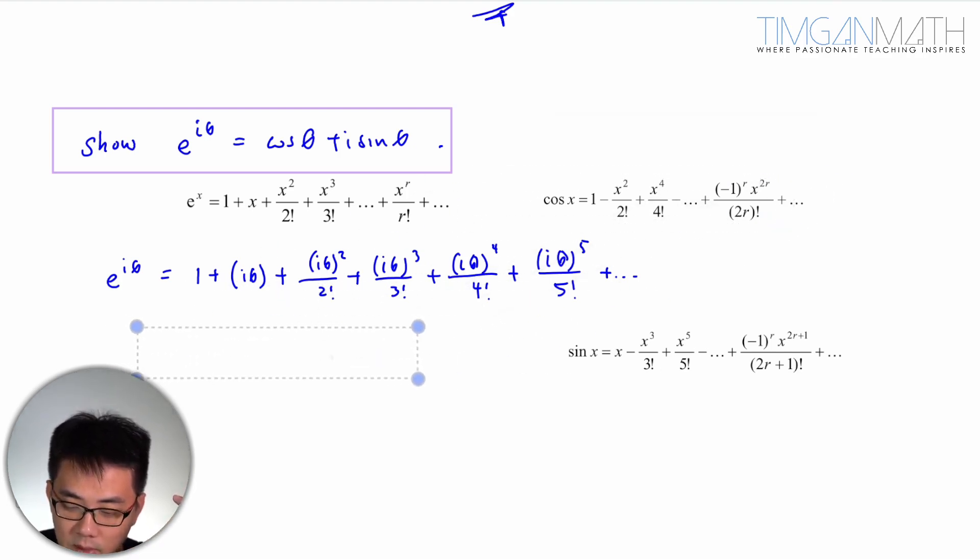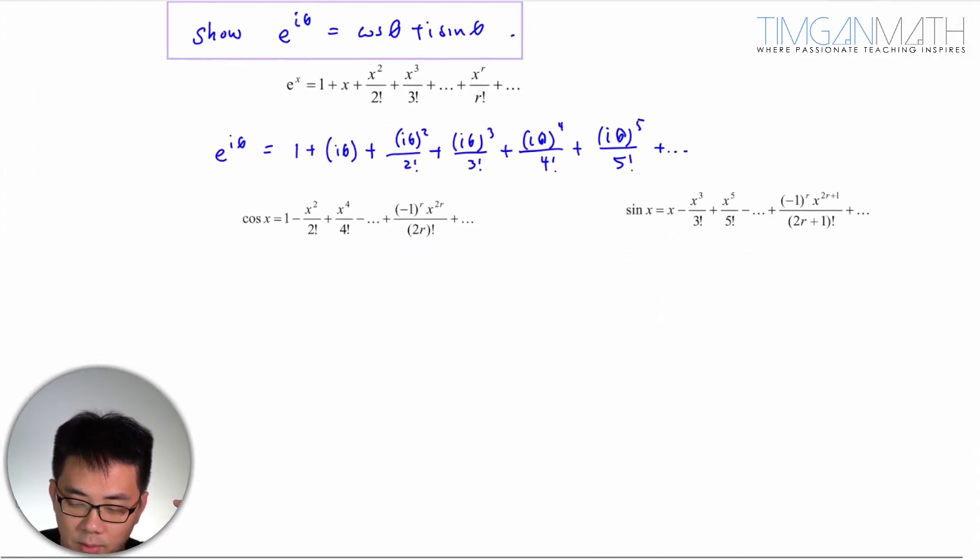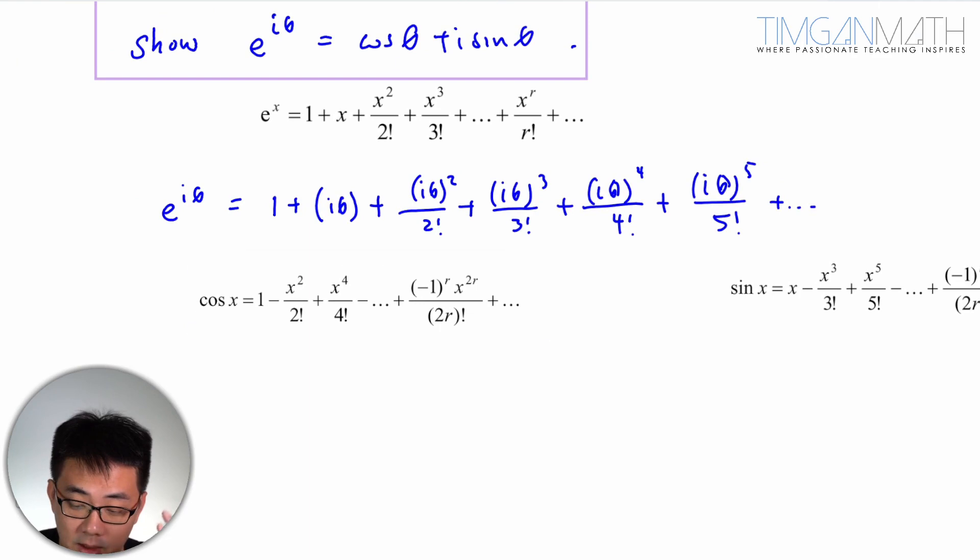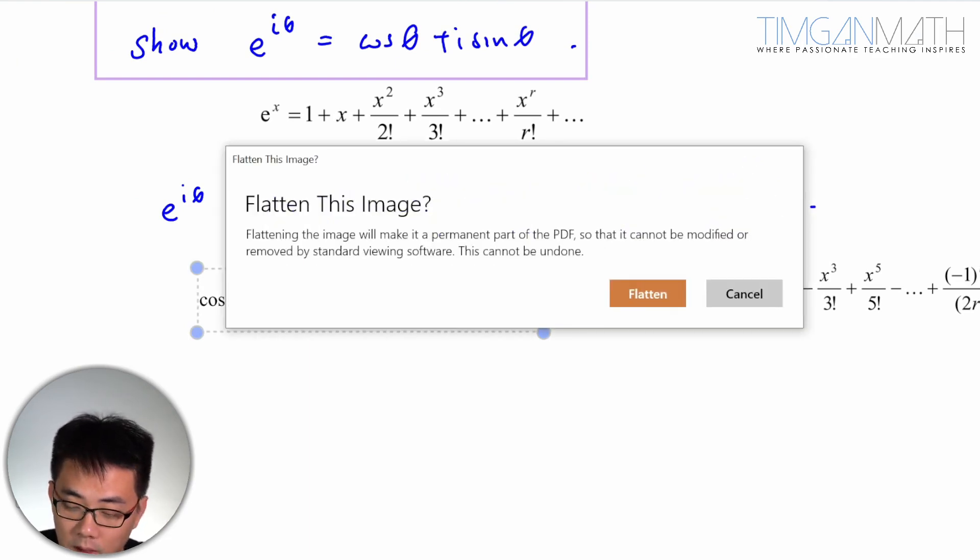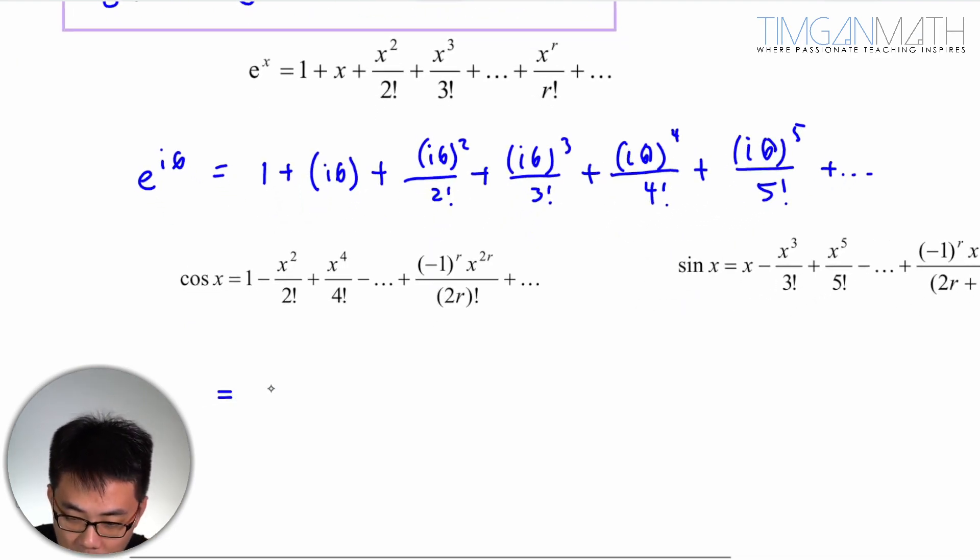What I'm doing here is actually I'm going to congregate the even power together and then the odd power together. So this part here will just be 1 plus (iθ)² over 2 factorial. Just keep the factorial sign because life is good. Don't go and change it. Then after that you have got this as plus (iθ)⁴ over 4 factorial. So the even power together, you can put this as power 6 if you want to.